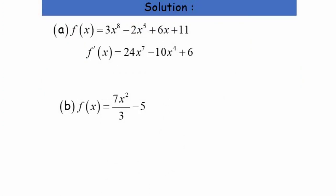For part a, differentiating 3x⁸: multiply 8 by 3 to get 24, subtract the power by 1 giving x⁷. Then 5 times −2 gives −10, and subtracting the power gives x⁴. Differentiating 6x gives 6, and differentiating the constant 11 gives 0, since the derivative of a constant is 0.